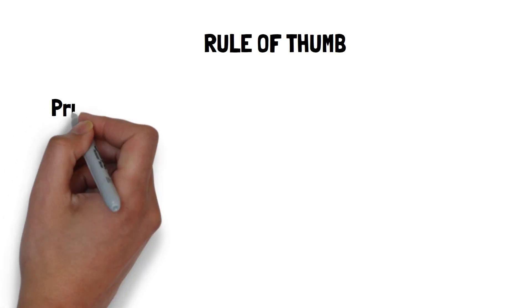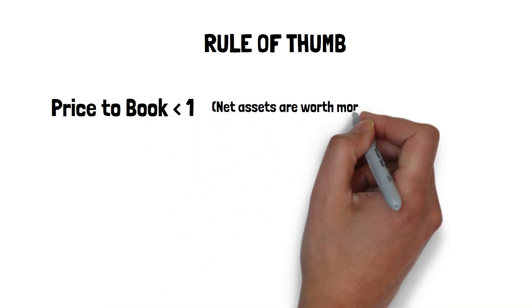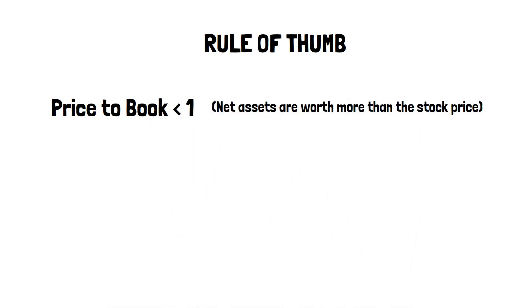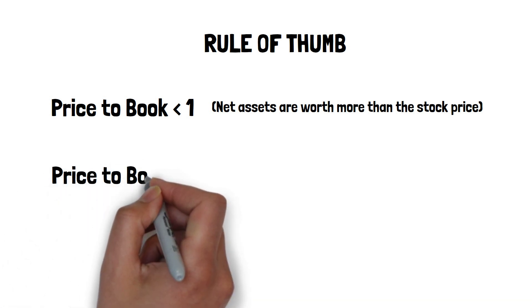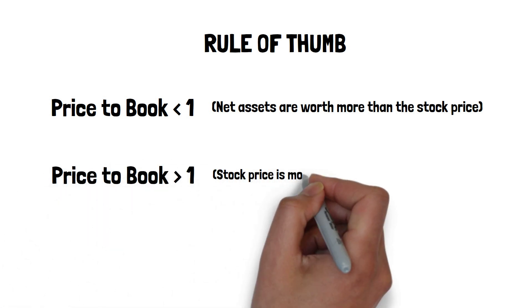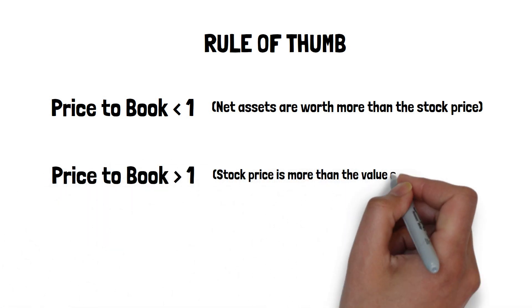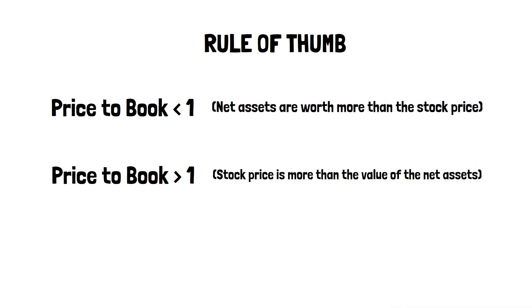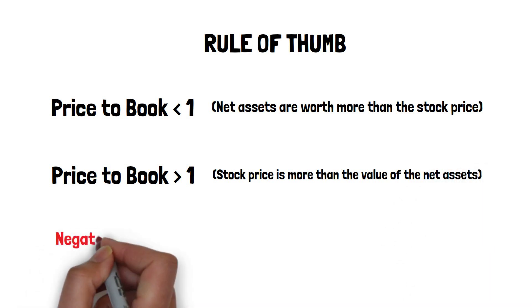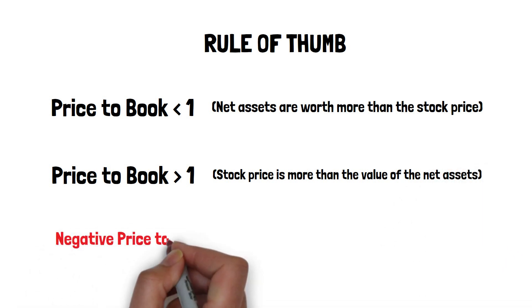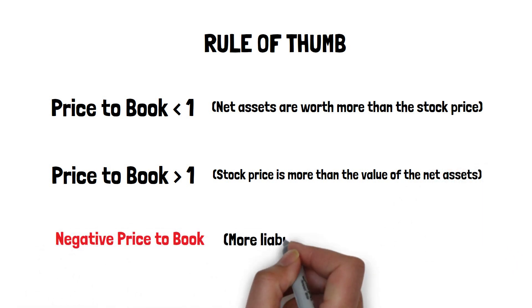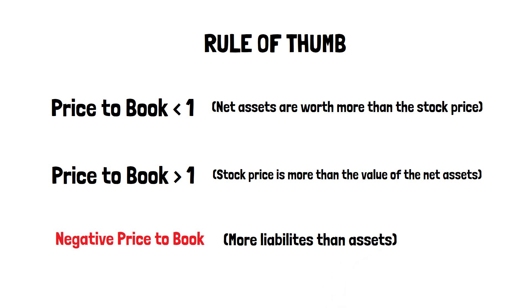As a rule of thumb, a price-to-book ratio of less than one would mean you're paying a price less than what the company's net assets are worth. A price-to-book of greater than one would mean you're paying a price more than what the net assets are worth. A negative PB ratio means the company has more liabilities than assets.